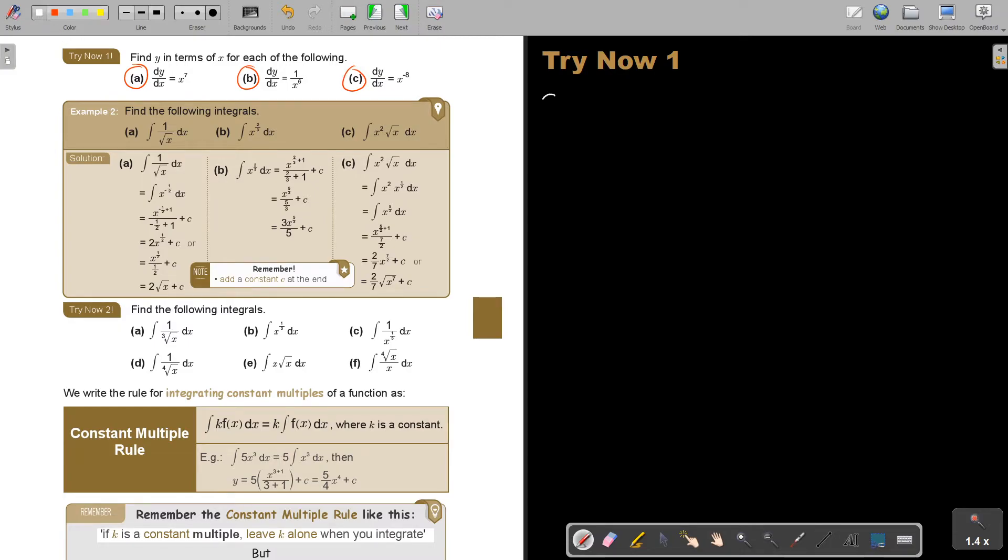Number A. dy by dx is equal to x to the power of 7. Now, don't forget that we just make it y, because originally it was y. Then it's 7 plus 1, which is 8. So it's x to the power of 8, divide by 8, plus c. Please don't forget that plus c.